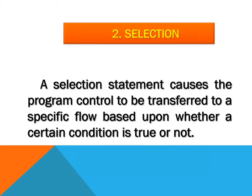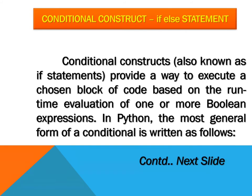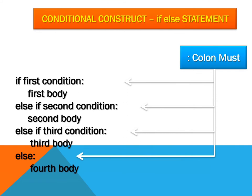Selection. A selection statement causes the program control to be transferred to a specific flow based on whether a certain condition is true or not. The conditional construct, also known as the if statement, provides a way to execute a chosen block of code based on the runtime evaluation of one or more boolean expressions. In Python, the most general form is written as: if first condition, first body; elif second condition, second body; elif third condition, third body; else fourth body. Note that the colon is required.